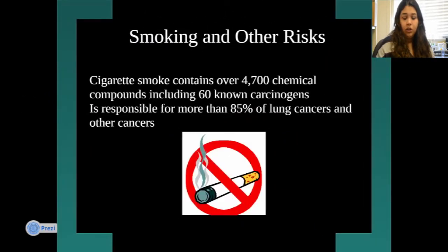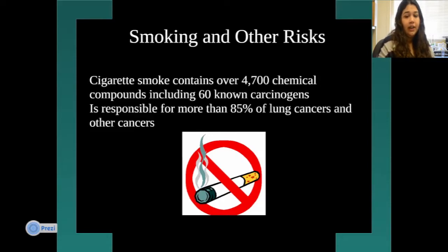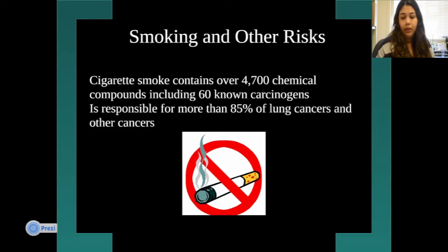Smoking and other risks are part of indoor or outdoor air pollution. You need to know that cigarette smoke contains over 4,700 chemical compounds, including six known carcinogens. A carcinogen is something that can cause a tumor or cancer. Smoking is responsible for more than 85% of lung cancers and other cancers, so it carries a very high risk.